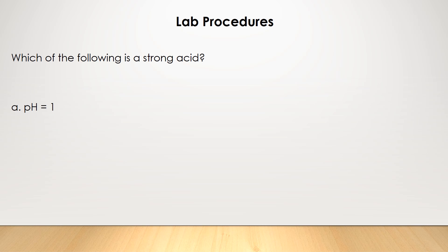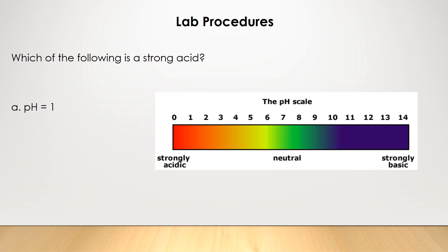If you don't remember the pH scale, let's go over it quickly. The pH scale goes from 0 to 14. A pH of 0 represents a very strong acid, and a pH of 14 represents a very strong base. In the middle, pH of 7 means it's neutral — neither acidic nor basic. If you go from pH of 0 towards pH of 7, the acid becomes weaker. If you go from pH of 14 towards pH of 7, the base becomes weaker.